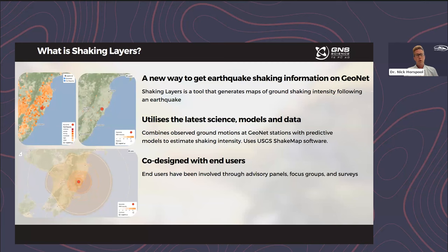Shaking Layers looks like the map shown at the bottom left — a map of shaking from a recent earthquake near Parangau on the east coast of the North Island. Shaking Layers uses the latest science models and data within GNS Science, combining observed ground motions from our station network and FOUT reports with predictive models to estimate shaking intensity. To do this analysis we use the ShakeMap software developed and released as open source by the United States Geological Survey.